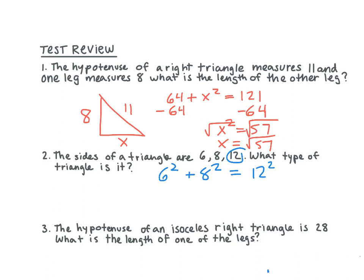So what's 6 squared? 36. 8 squared? 64. And 12 squared? 144. So 36 plus 64 is 100. Is 100 greater than, less than, or equal to 144? 100 is less than. So that means our C squared is bigger, so what type of triangle is this going to be? Obtuse.